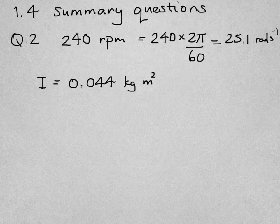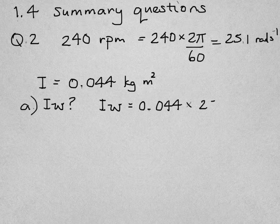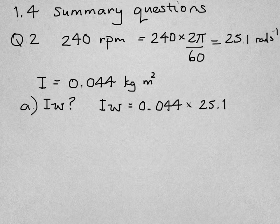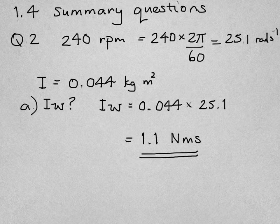It also tells us that the moment of inertia of the disc and the axle is 0.044 kilograms meters squared, and the first thing it wants us to do is calculate the angular momentum of the disc and axle. I × ω, so 0.044 times 25.1, multiply together to give us 1.1 newton meters seconds. That's part A.